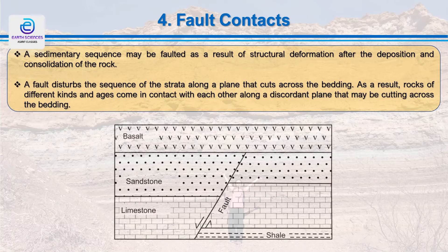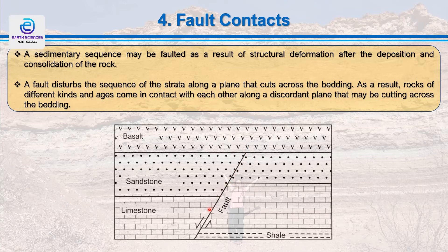A sedimentary sequence may be faulted after its deposition as a result of structural deformation. A fault is essentially a shear fracture which disrupts the sequence of strata along a plane that cuts across the bedding. As a result, rocks of different kinds, different lithology, and different age come into contact with each other along a discordant plane. As in this particular case, one block is going down and another block is going up as a result of normal faulting.